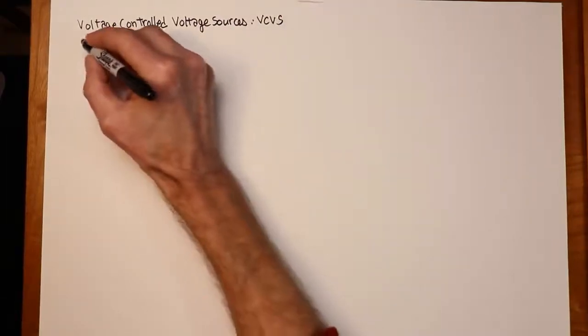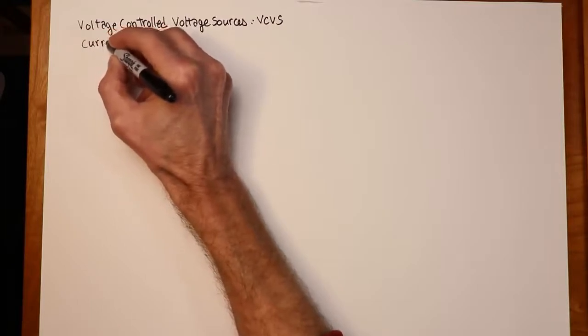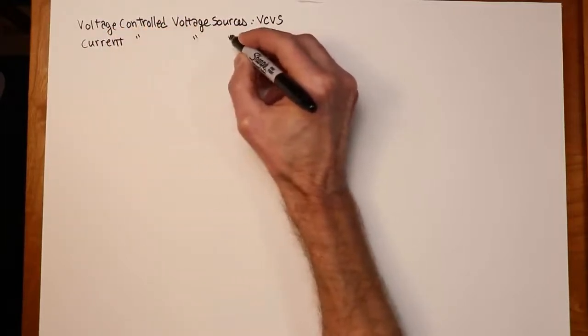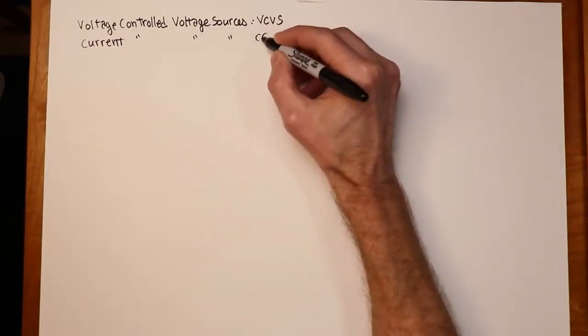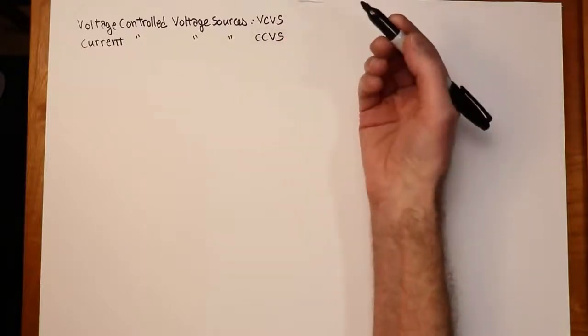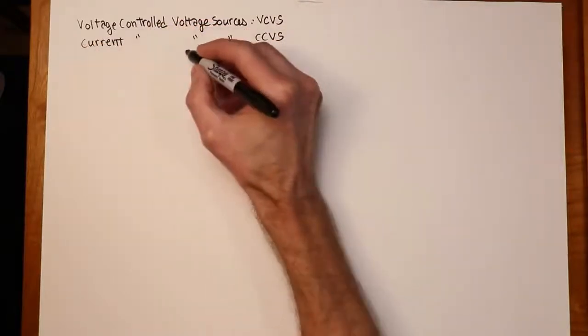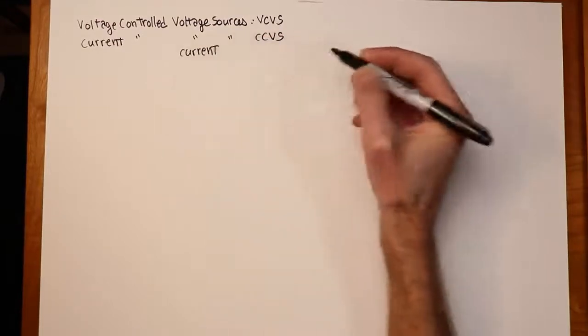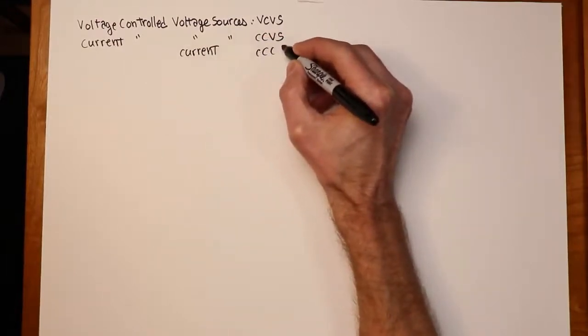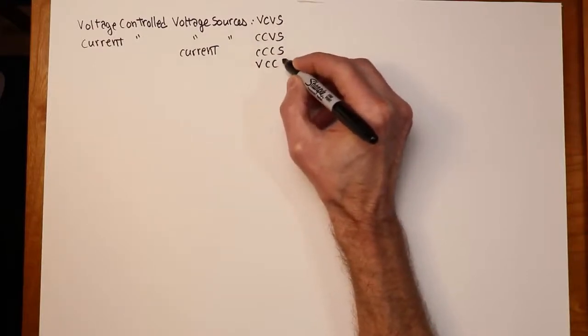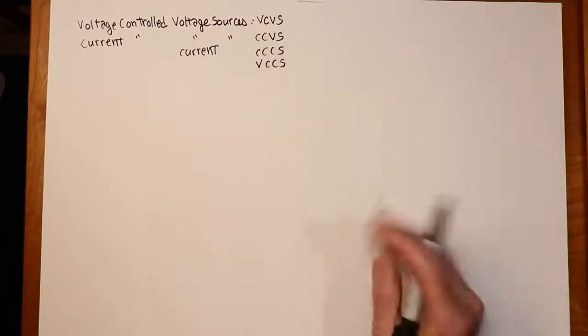We also have a current controlled voltage source, CCVS. And then we have the current sources - the same two things but as current sources. So we have a current controlled current source, CCCS, and a voltage controlled current source, VCCS. Four different things.